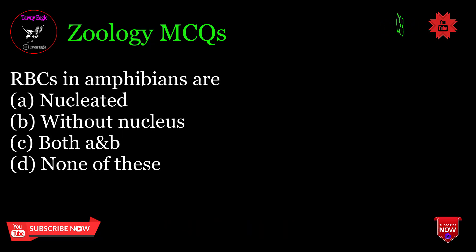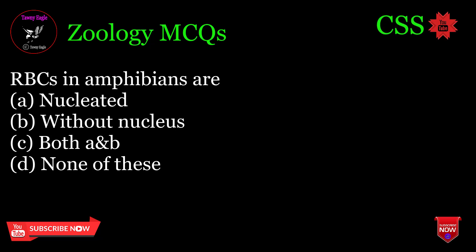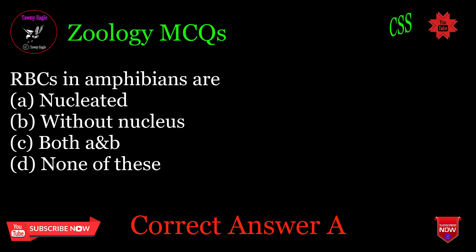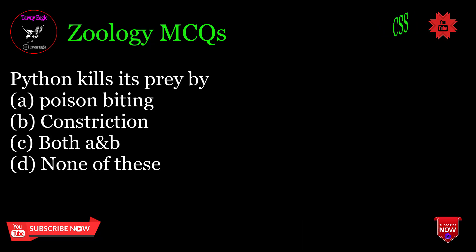RBCs in amphibians are: A. Nucleated, B. Without nucleus, C. Both A and B. Correct answer: B.